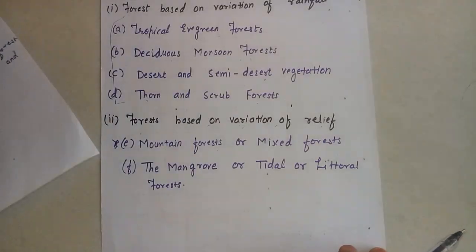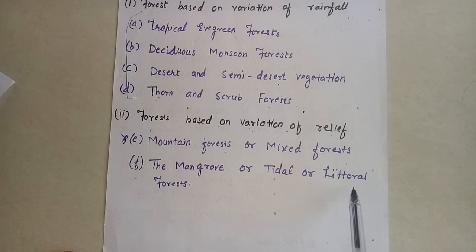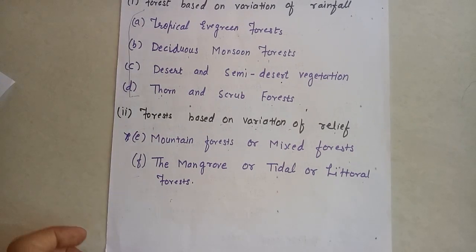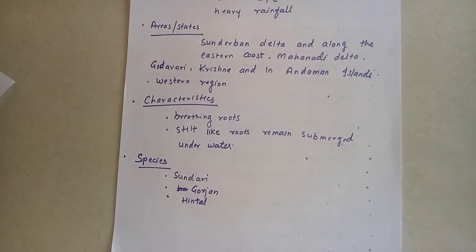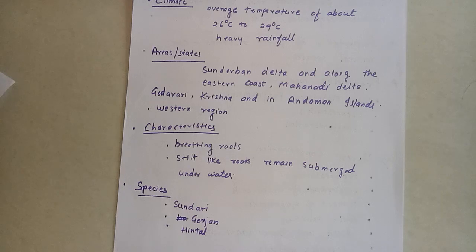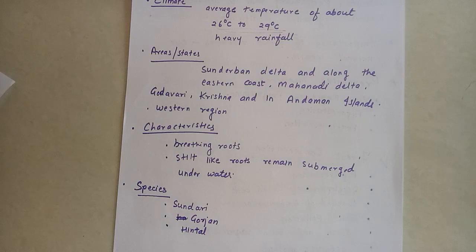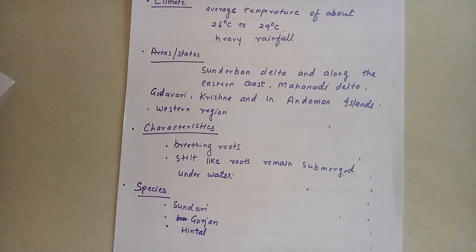Now come to our last type: mangrove, or tidal, or littoral forest. First we will see what are the climate conditions of these types of forests. The tidal forest occurs in and around deltas with an average temperature of about 26 to 29 degrees Celsius and heavy rainfall of more than 200 centimeters required.